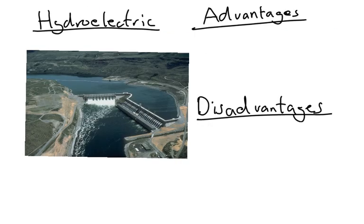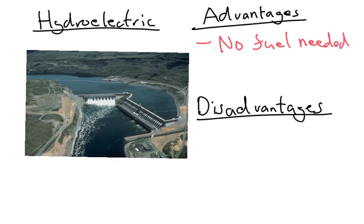We're going to start off with hydroelectric power stations and talk about their advantages and disadvantages. Firstly, one of the advantages: there's no fuel needed. They also don't release any harmful gases.